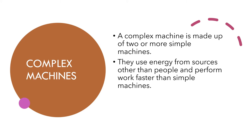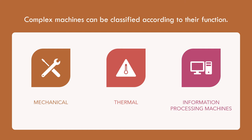Complex machines. A complex machine is made up of two or more simple machines. They use energy from sources other than people and perform work faster than simple machines. Complex machines can be classified according to their function. They can be mechanical, thermal, or information processing machines.